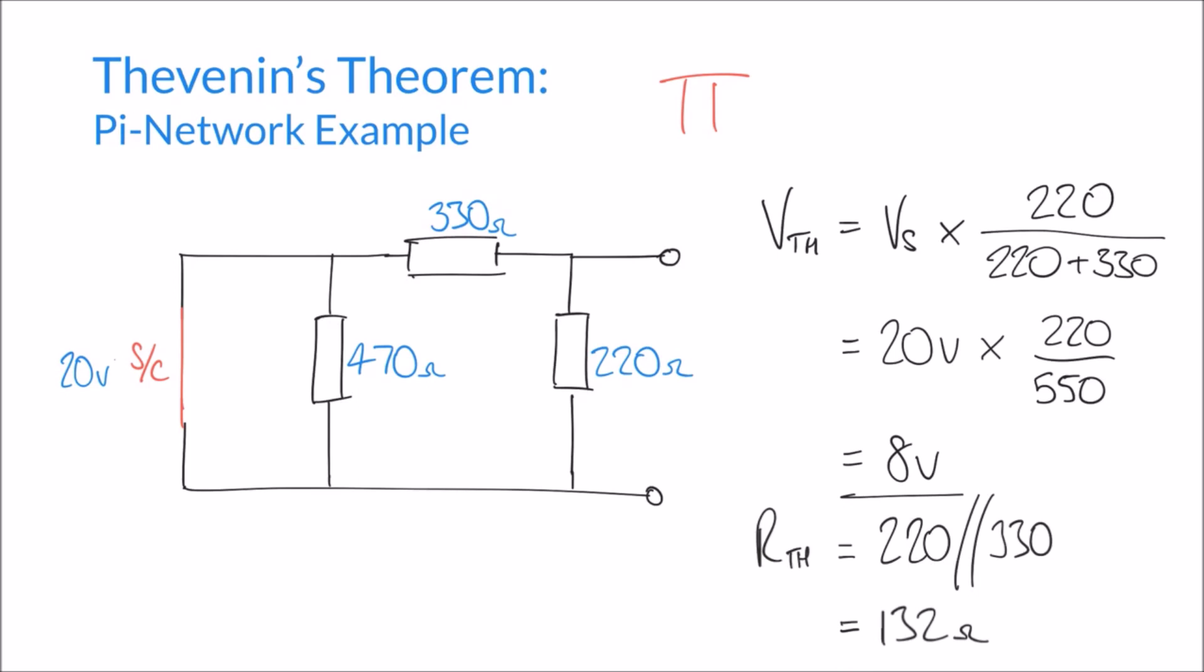And so very simply, as a last little point here, we can simplify this entire circuit, like we said at the start, down to one voltage supply and one series impedance, which is our Thevenin resistance. And we've got our open terminals on the end there. There's our Thevenin equivalent circuit.